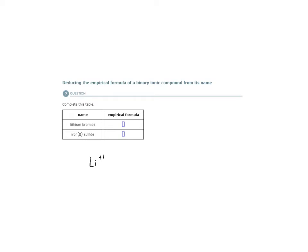Bromide is the ion of bromine. Bromine is a group 7A element. It's a halogen. And the halogens typically form ions with a minus 1 charge.